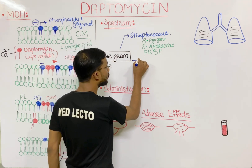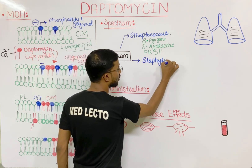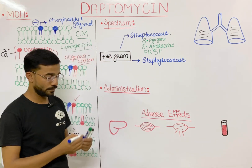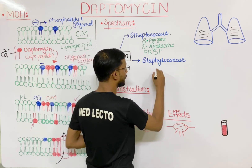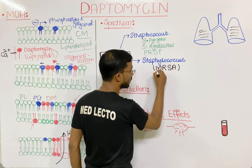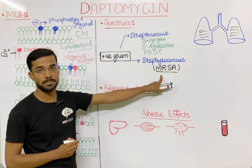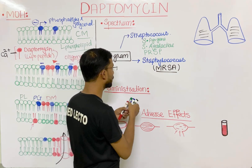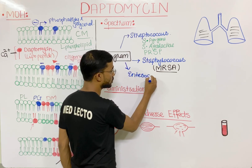Daptomycin also covers Staphylococcus, and most importantly, MRSA — methicillin-resistant Staphylococcus aureus. That is the most important and specific action of daptomycin. It also provides coverage for Enterococcus species.